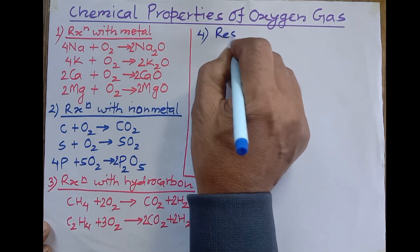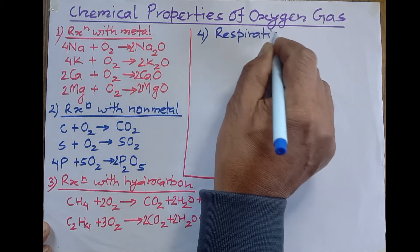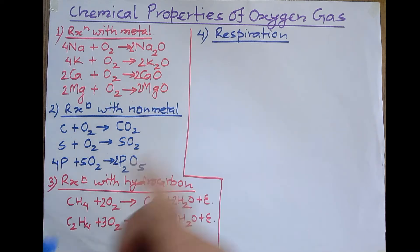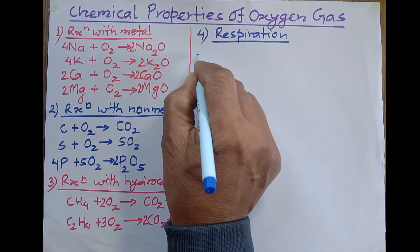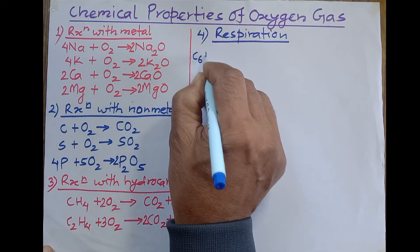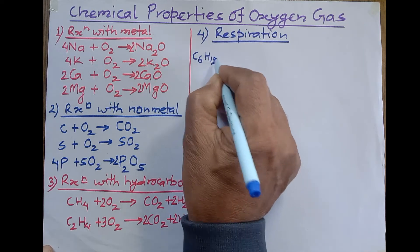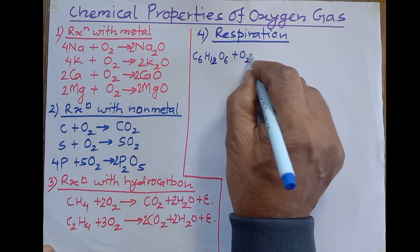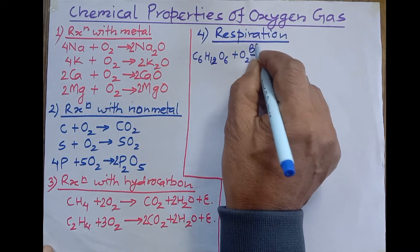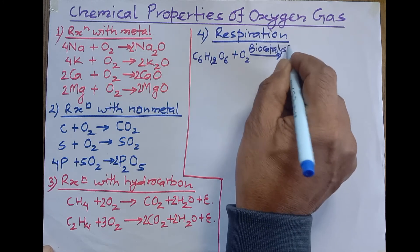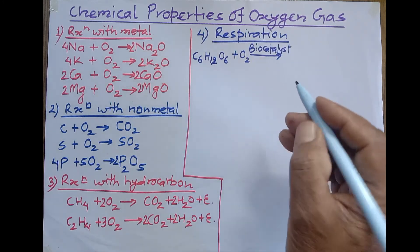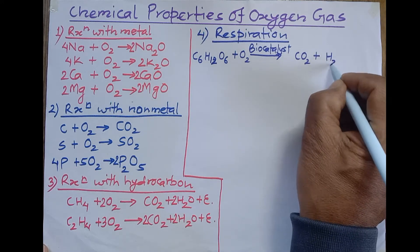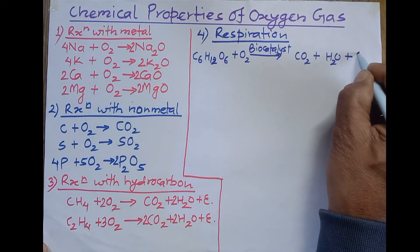Number four: in the process of respiration, oxygen reacts with glucose contained in the cells with the help of a biocatalyst to release energy. Glucose (C₆H₁₂O₆) reacts with oxygen in the presence of a biocatalyst, and what it forms are carbon dioxide gas and water — these are byproducts — but we are primarily interested in the energy released.